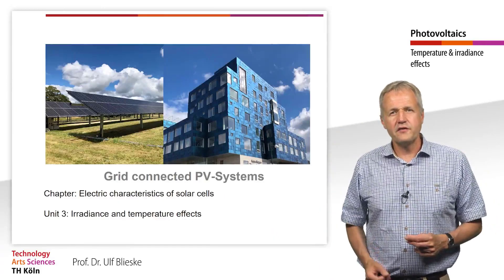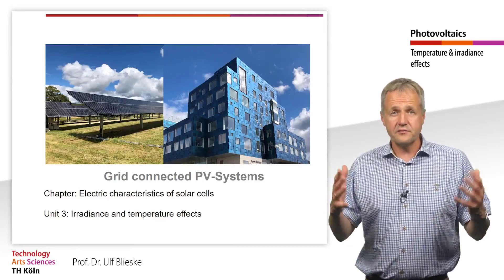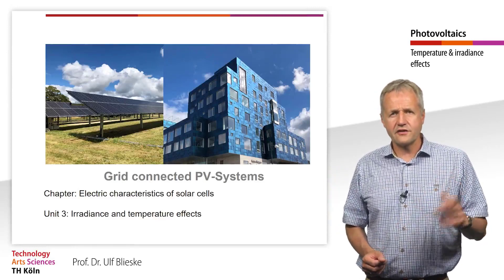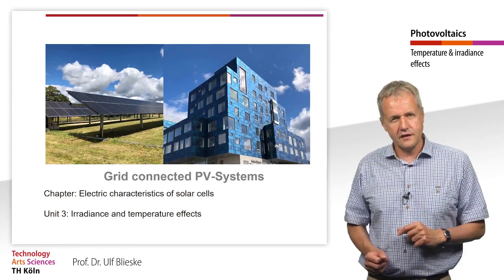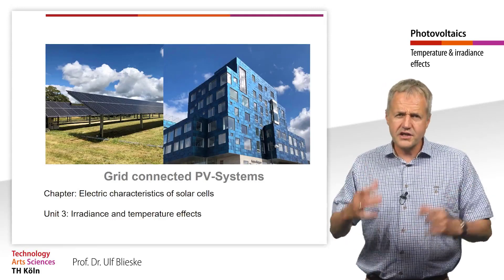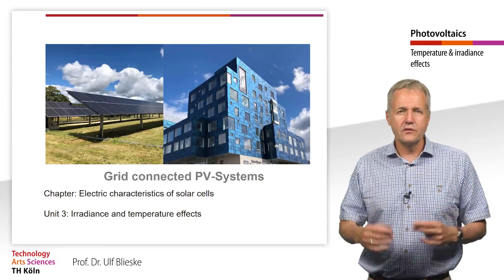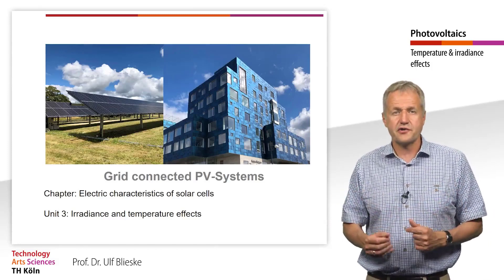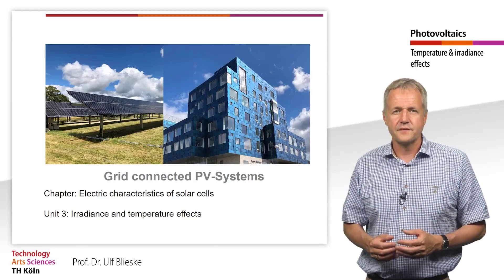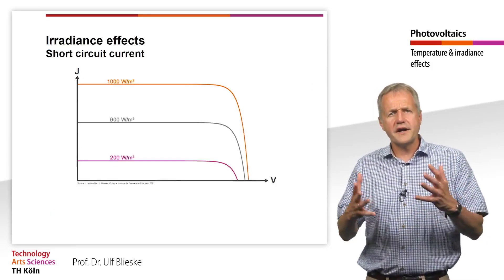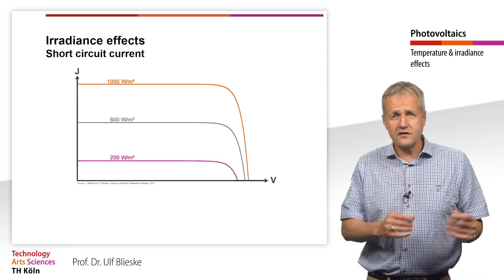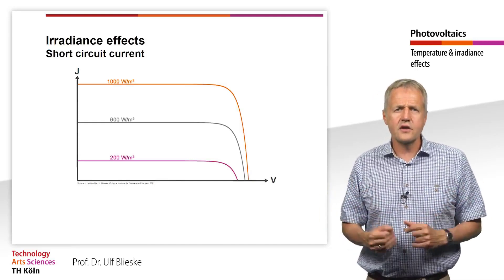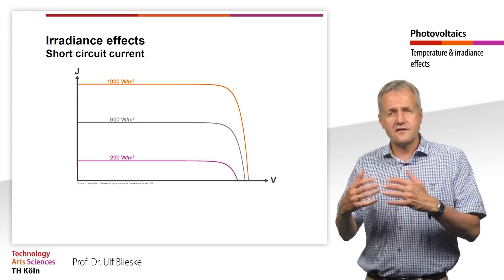Welcome to the PVOnline course on grid-connected PV systems. This chapter is called electrical characteristics of a solar cell. In this particular teaching unit we will deal with the influence of temperature and irradiance on the JV characteristic of a solar cell. To understand how a change in temperature or irradiance affects the electrical behavior of a solar cell, let's look at both effects separately.